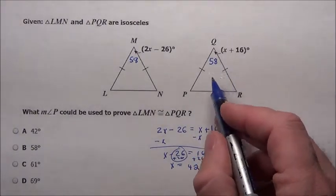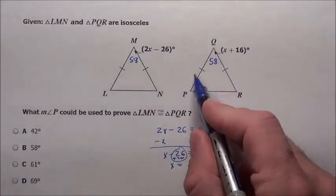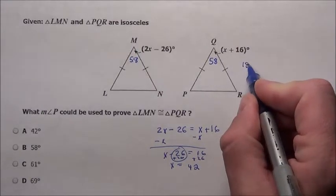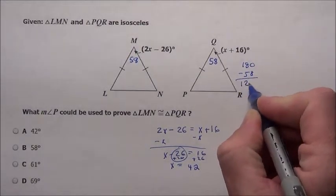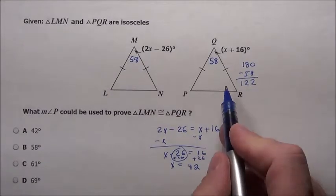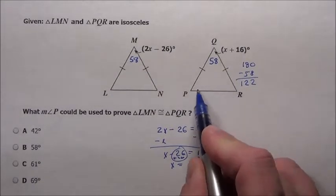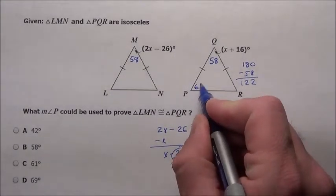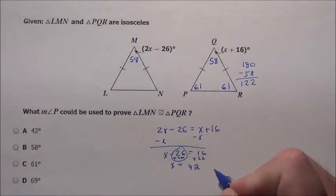If that's 58, we know the whole thing adds up to 180. So if you do 180 take away 58, I get 122 in my head. 122 has to be split equally between these two. That means you have 61 and 61.